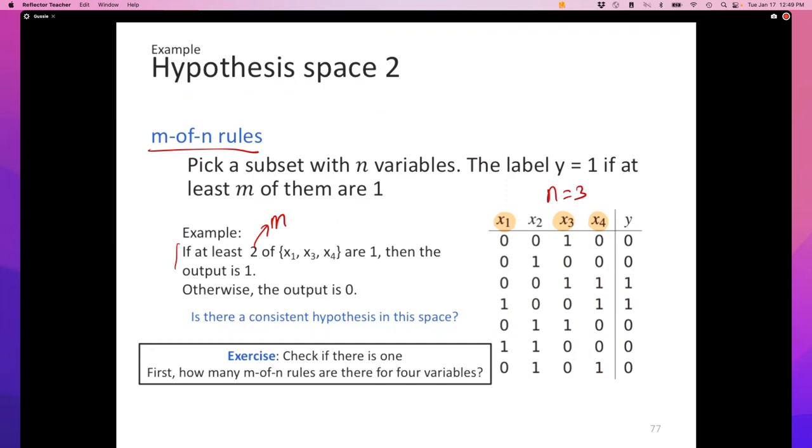So in this case, for example, I could say, if at least two out of x1, x3, and x4 are true, then the output is one, otherwise the output is zero. So the learning algorithm, whatever it is, here has to first find a subset of these variables and then pick the number M. Now, I'm going to leave this as an exercise for you. Maybe someone has already done this, maybe not. The exercise was to see if there is an M of N rule that fits these seven examples. Did anyone go through that? Turns out that this particular M of N rule fits the data. You can verify that offline. I'll leave it as an exercise for you to count how many M of N rules are there. And the hint is it's much less than 2 power 15.